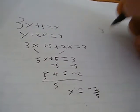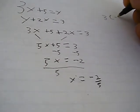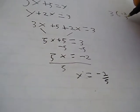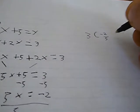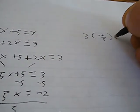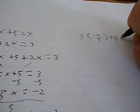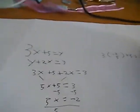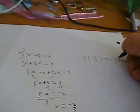So, 3 times negative 2 fifths plus 5 will be equal to 3.8.